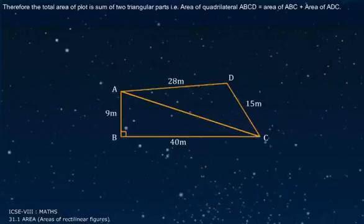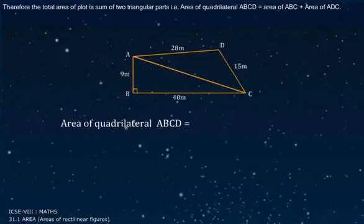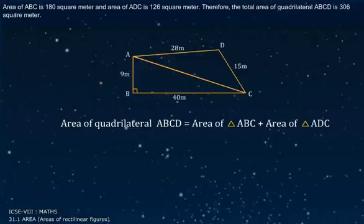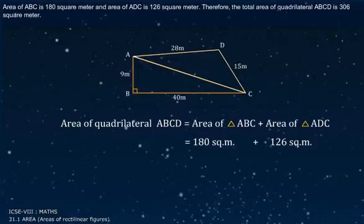Therefore, the total area of the plot is the sum of the two triangular parts. Area of quadrilateral ABCD = Area of Triangle ABC + Area of Triangle ADC = 180 + 126 = 306 square meter.